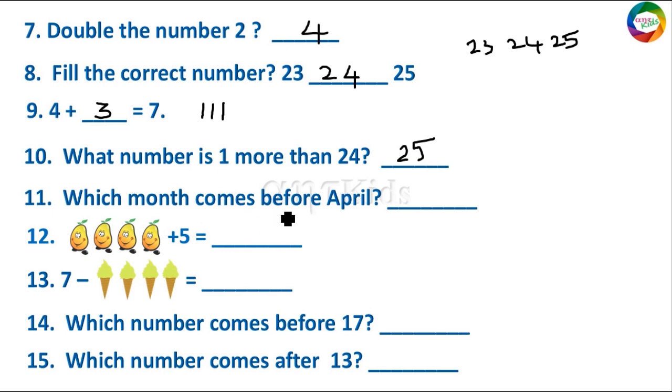Which month comes before April? Before April. So January, February, March, April. Before April is March. Before April you have the month is March.